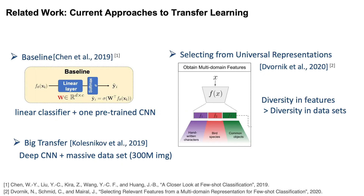Recent work suggests that the transfer learning method is quite promising in the few-shot setting. For example, the baseline method built one linear classifier on top of one pre-trained CNN. The Selecting from Universal Representations approach argues that diversity in features is best obtained through diversity in datasets. And the Big Transfer model trained a very deep CNN on a massive dataset.